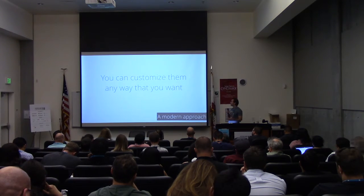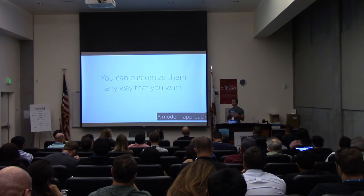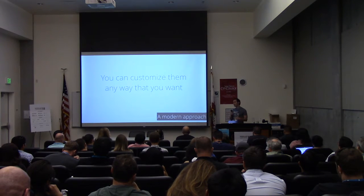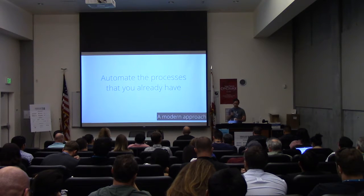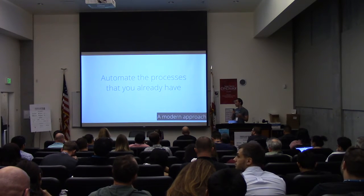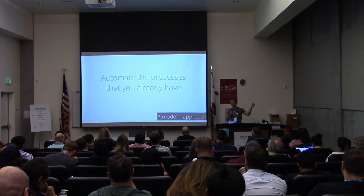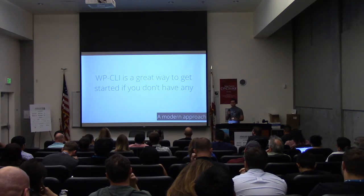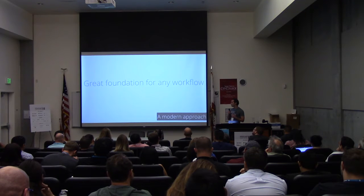You can really customize this any way that you want. All these services are very flexible and can let you build the custom workflow you need. If you already have processes for checking code and enforcing quality, I would look into automating those first rather than just jumping in and using WP-CLI. But WP-CLI is a great, easy way to get started if you don't have anything, and it's really a great foundation for any workflow you want to build.